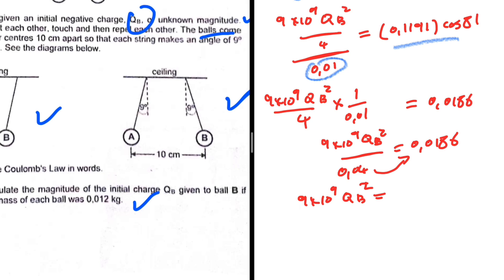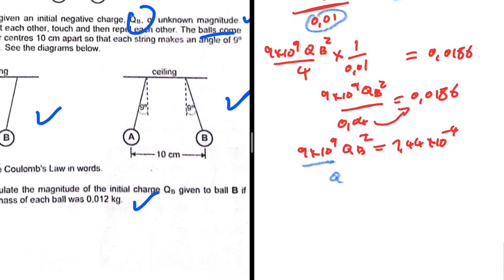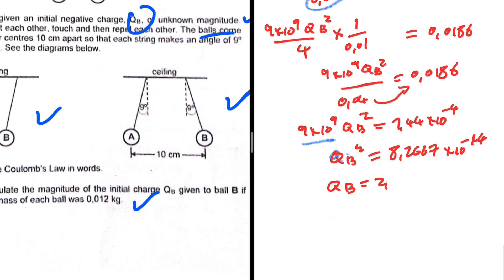Dividing both sides by 9×10⁹, we get qb² = 8.2667×10⁻¹⁴. Taking the square root of both sides gives qb = 2.8752×10⁻⁷ coulombs. That is the answer to question 7.2.2.